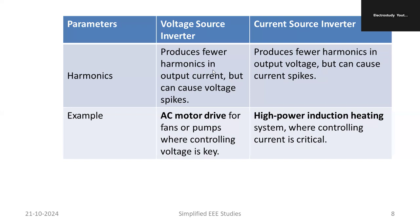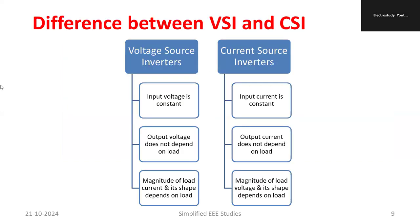To conclude, the major differences between CSI and VSI are: in VSI, input voltage is constant; in CSI, input current is constant. Output voltage does not depend on the load in VSI, whereas output current does not depend on the load in CSI. The magnitude and shape of load current depends on the load in VSI, while in CSI the magnitude and shape of load voltage depends on the load.